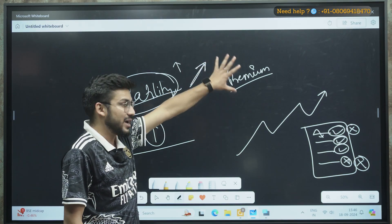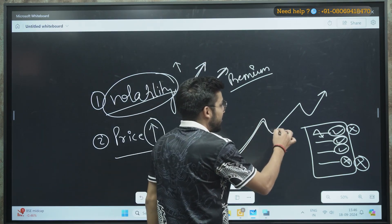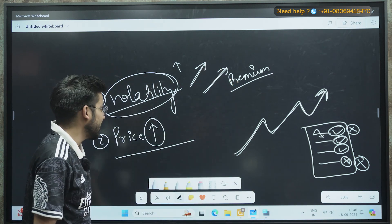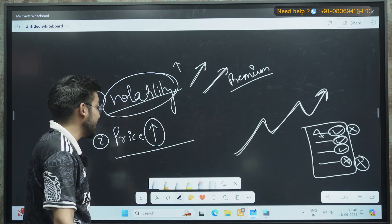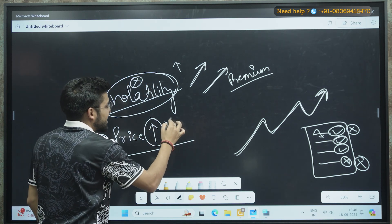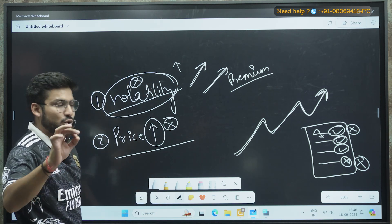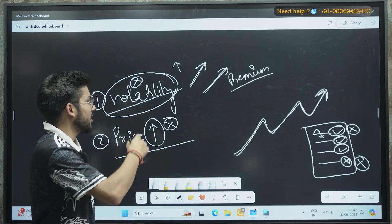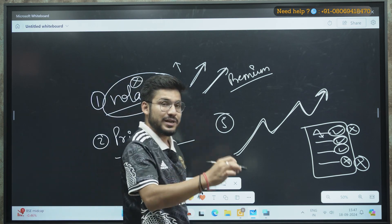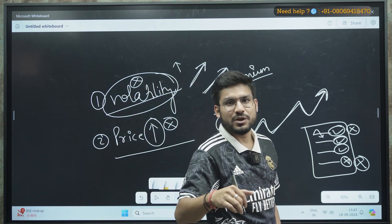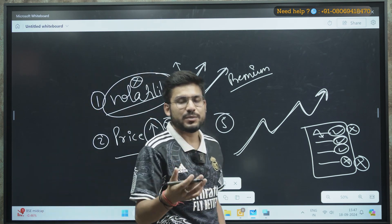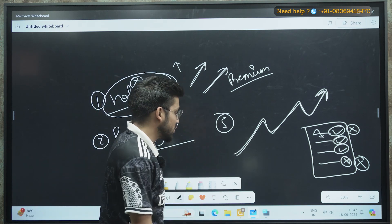Whenever your price is going in the bullish direction and at the same time volatility is increasing, that means there may be momentum that continues in your direction, so you should hold that stock. At any point if either the volatility or the price is decreasing, you can conclude that position and book some profit. This way, if your stock falls, you will not face much loss.